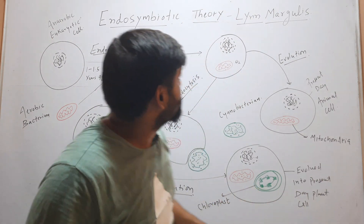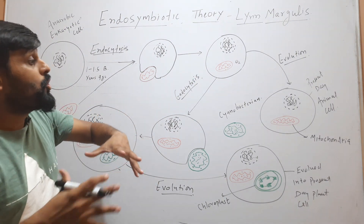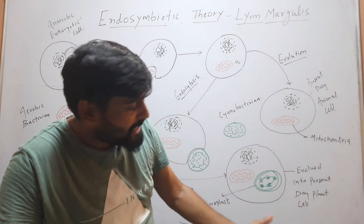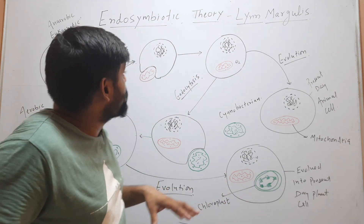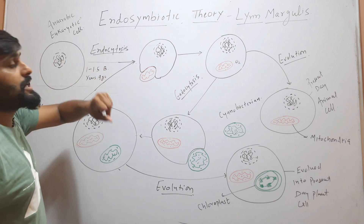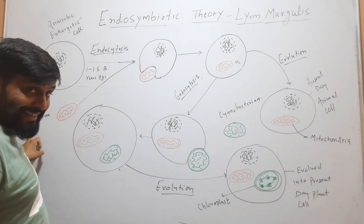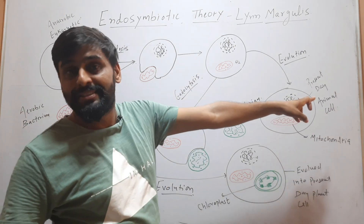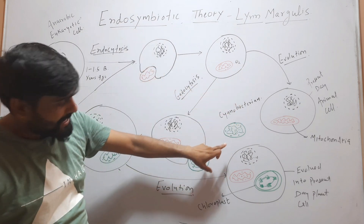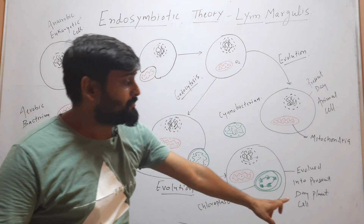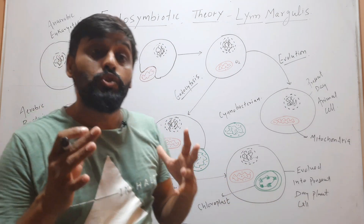Over time, this cyanobacteria evolved into chloroplast, and this cell ultimately evolved into the present-day plant cell. So this is endosymbiotic theory, which tells us how mitochondria and present-day animal cells evolved, and how present-day plant cells evolved — through two endocytosis events: first engulfing aerobic bacteria to become animal cells, then some of those cells engulfing cyanobacteria to ultimately become present-day plant cells.